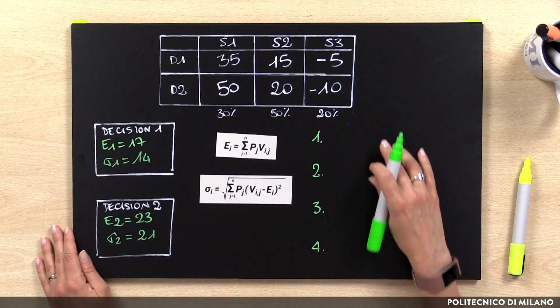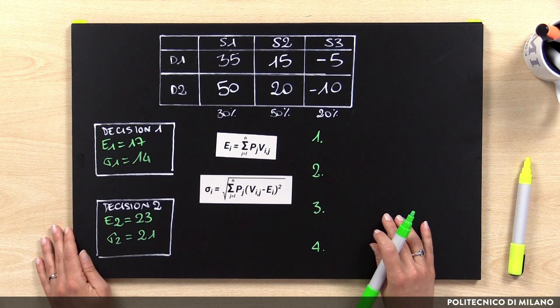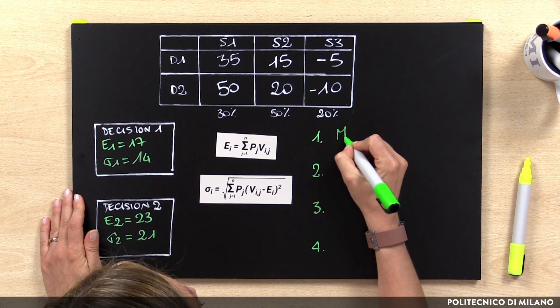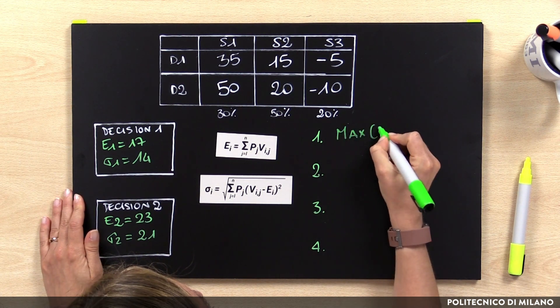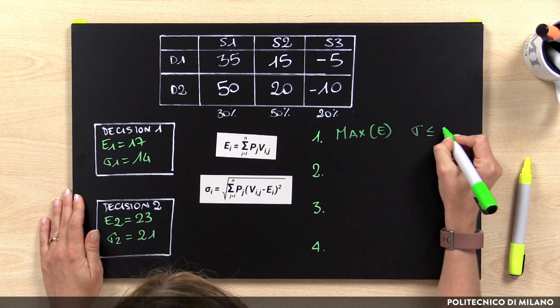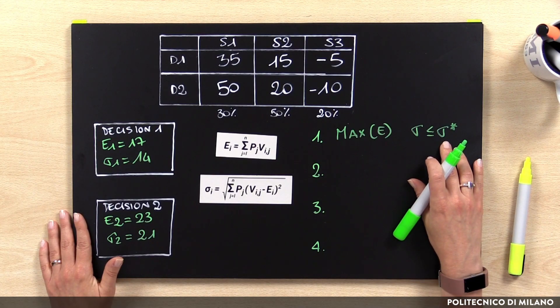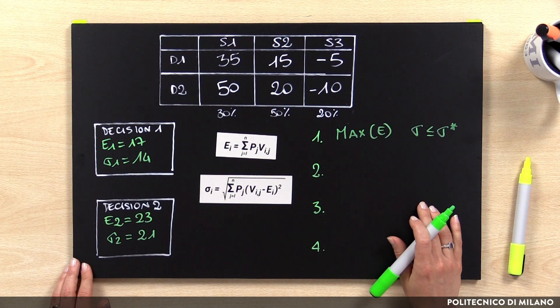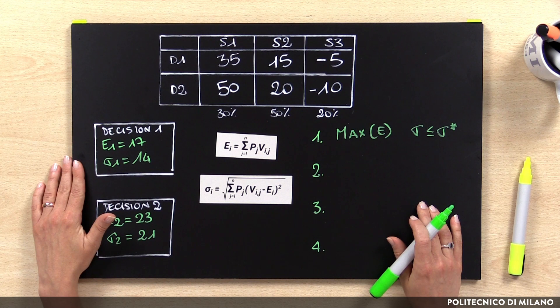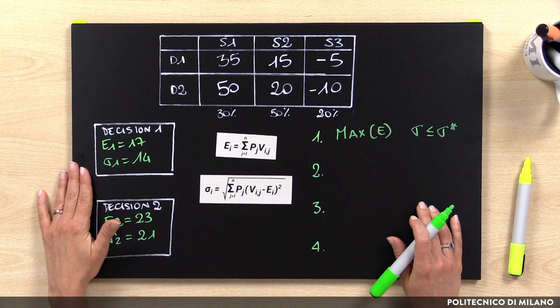Considering this personal attitude, there are four approaches that could be used to take decisions in risk environments. The first method is the maximization of the expected value, considering only those decisions that have a standard deviation below a predefined value. For example, if we set a predefined value equal to 20, D2 is automatically excluded and we select D1. On the contrary, if we set a value of 25, both alternatives meet this threshold and D2 will be selected, because it has the highest expected value.